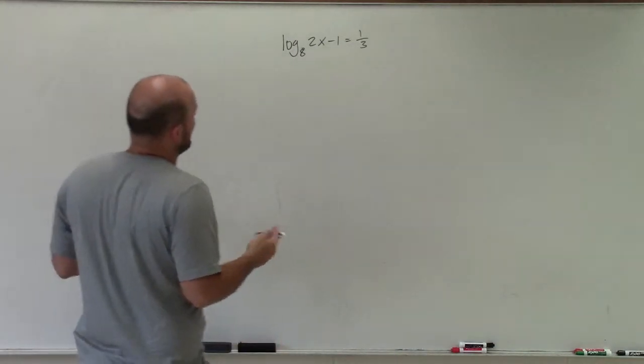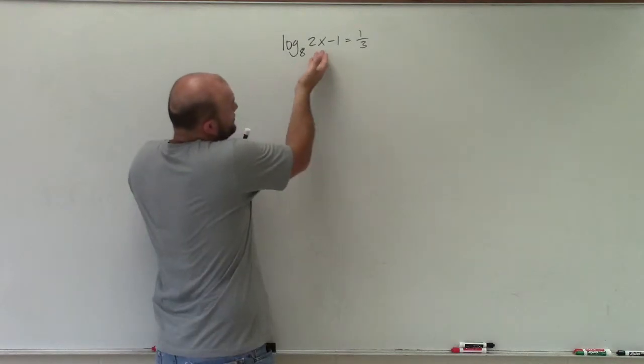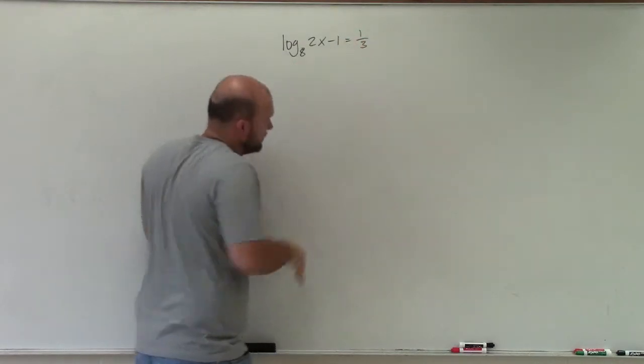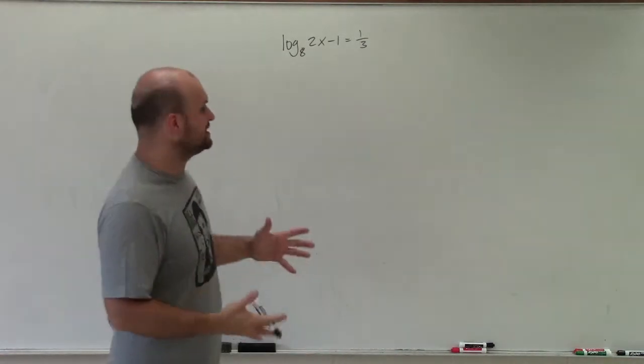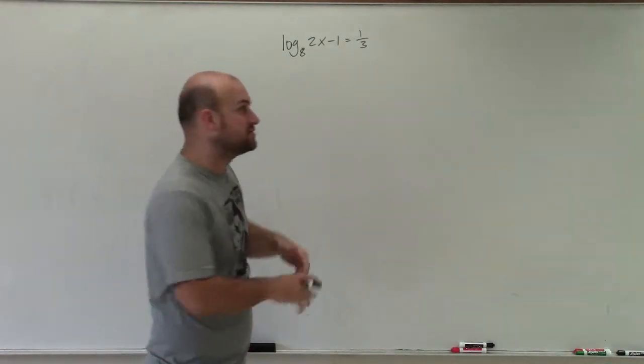Right now, we have log 8 of 2x minus 1 equals 1/3. A lot of times, we can rewrite this in exponential form.